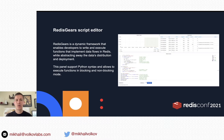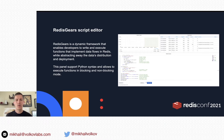Another panel is the Redis Gears script editor. Redis Gears is a dynamic framework that enables developers to write and execute functions. On the Grafana dashboards, you can see the memory usage and existing registrations in your database. You can modify your script and execute functions in blocking and unblocking mode.